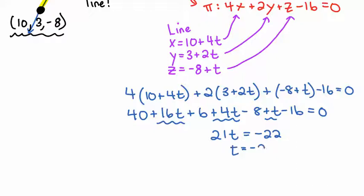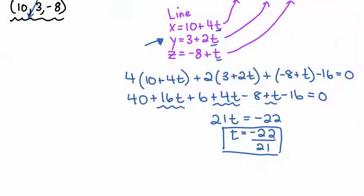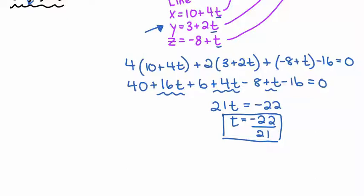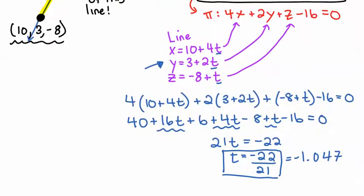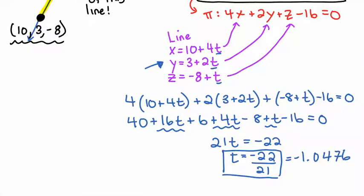So then t is equal to negative 22 over 21. So that value right there, we can sub back into our parametric equations for all the t's, and then that will give us the point where they intersect. And I think in class I got lazy and switched my fraction to a decimal. It was like negative 1.04 something, 476. I'm just guessing. So I'm going to sub t back into our parametric equations.